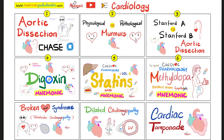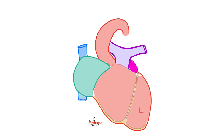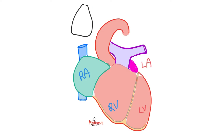This is my cardiology playlist — it has cardiac anatomy, physiology, pharmacology, and pathology. As you know, we have four chambers in the heart: left atrium, left ventricle, right atrium, and right ventricle. The left ventricle is connected to the aorta, whereas the right ventricle is connected to the pulmonary trunk, which then divides into the right pulmonary artery for the right lung and the left pulmonary artery for the left lung.